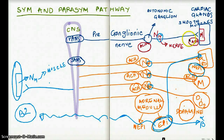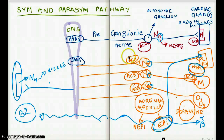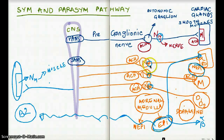Here the neurotransmitter was acetylcholine, but here the neurotransmitter is norepinephrine. Here the receptor was muscarinic; here the receptors are alpha and beta. But things are the same at the preganglionic level: the neurotransmitter is acetylcholine, and the receptor is also nicotinic with an N. So this is our first example.